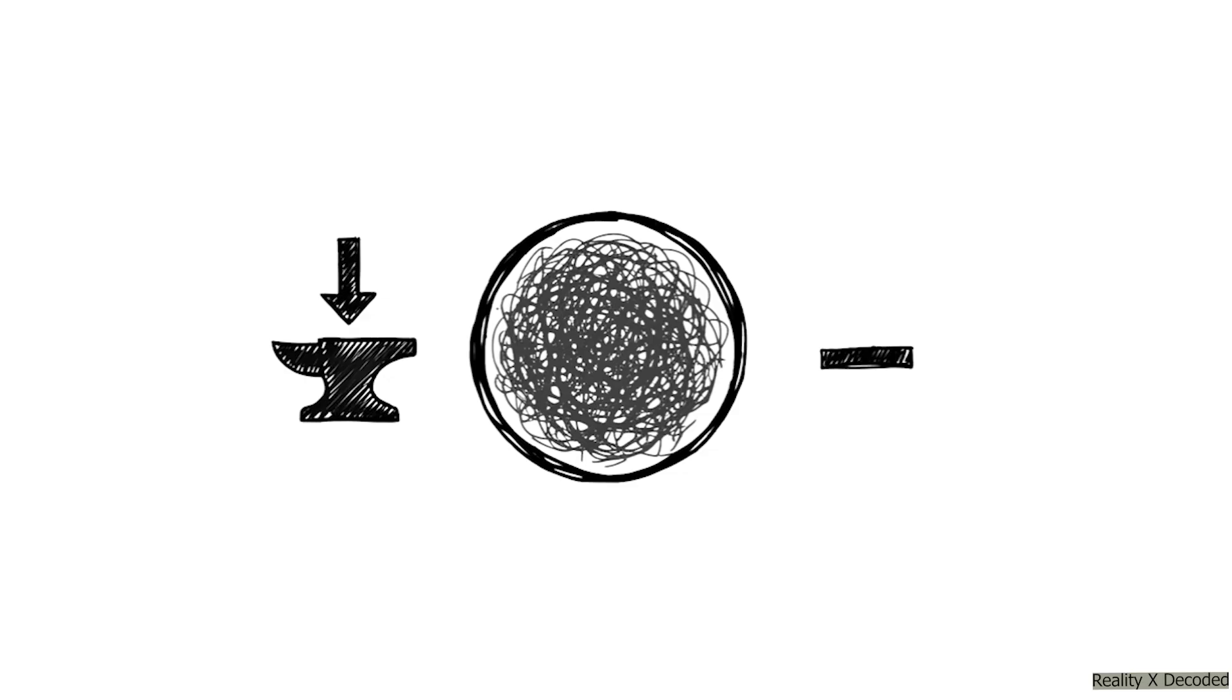Enter our test subject, the electron. Now this isn't some ghost-like wave. This is a real physical thing. It's got mass, it's got an electrical charge. For all intents and purposes, it should act like a microscopic bullet. There's no way it should be able to be in two places at once, right?